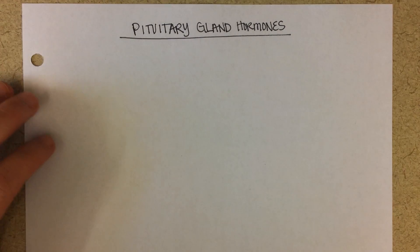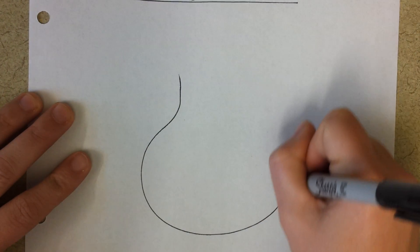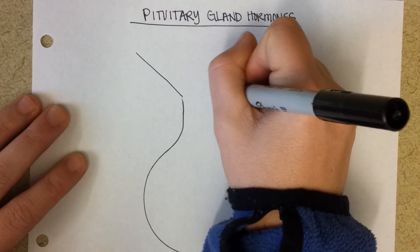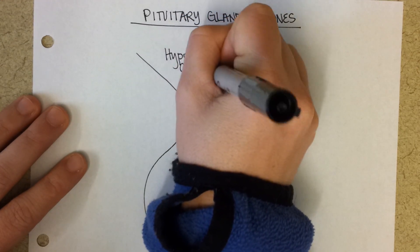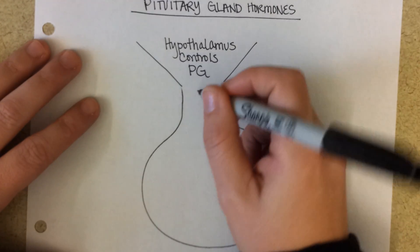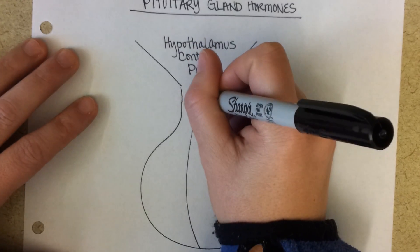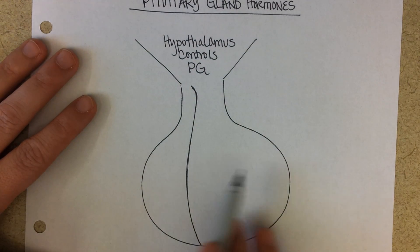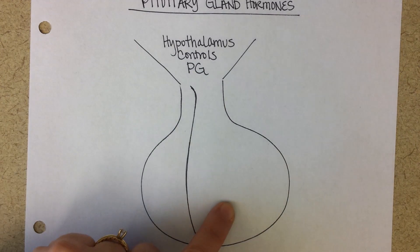Pituitary Gland Hormones. Let's draw the pituitary gland. The pituitary gland is controlled by the hypothalamus, which is above it. PG stands for Pituitary Gland, and we'll divide most of the pituitary gland into the anterior pituitary gland. Sometimes people get an adenoma in the front part of the pituitary gland. The back part is made more of nervous tissue, just like the brain, and the front is more epithelial tissue like a typical gland.